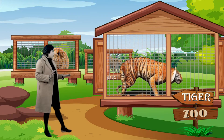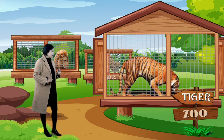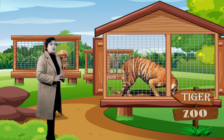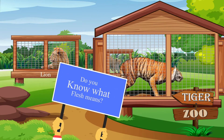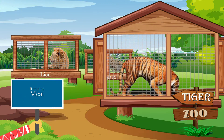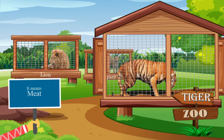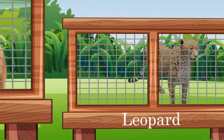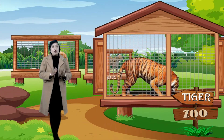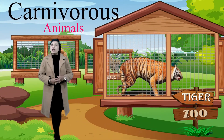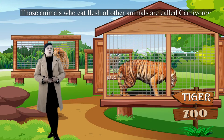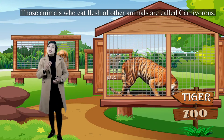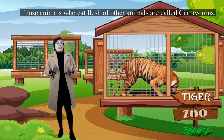Hey, be alert — see there, there is a tiger. It's eating flesh of other animals. Let's not disturb; I'm so scared of the tiger. Do you know what flesh means? It means meat. Animals like tiger, lion, and leopard eat flesh of other animals. They are called carnivorous animals. Those animals who eat flesh of other animals are called carnivorous animals.